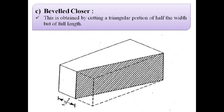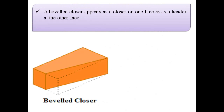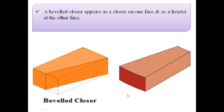The third type of closure is beveled closure. Beveled closure is obtained by cutting a triangular portion of half the width but of full length, as shown in this image. Here we can see this is the half part of the header and this is the full part of the stretcher — we get a beveled closure. A beveled closure appears as a closure on one face and as a header at the other face. Beveled closure is used for splayed brickwork.